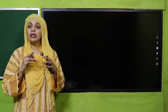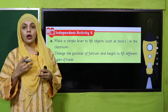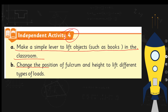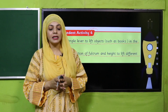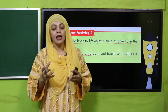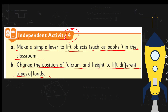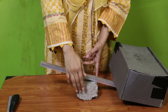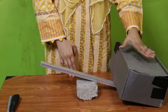Now through an activity we will make a lever and show all three components. Let's look at Independent Activity Number 4: make a simple lever to lift objects such as books in the classroom, and change the position of the fulcrum and height to lift different types of loads. To make a lever, we need a stiff rod. Here you can see this rod resting on a stone, which I am using as a fulcrum, and here is the weight — the load.